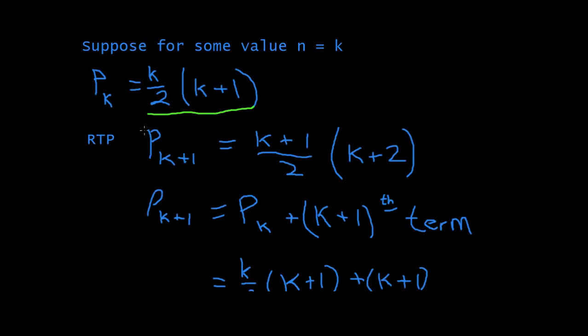Then, we're required to prove that PK plus 1 is equal to K plus 1 divided by 2 times K plus 2. Just add one to it, and in terms of ways, anywhere where you see K, change it to K plus 1, and you will get this.